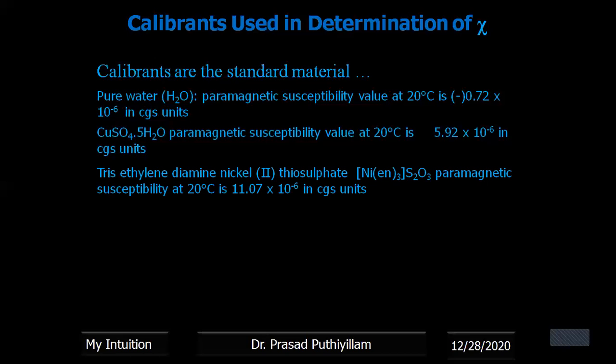The third one is triethyl diamine nickel 2-thiosulfate, that is Ni(en)₃(S₂O₃). Its paramagnetic susceptibility at 20 degrees Celsius is 11.07 × 10⁻⁶.